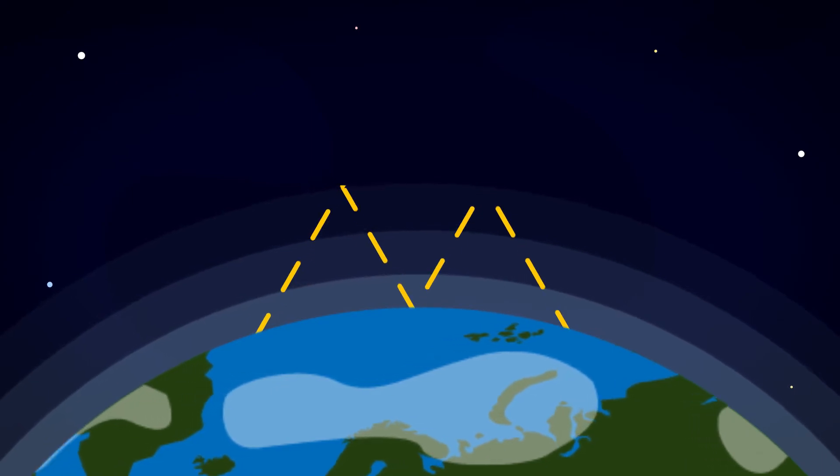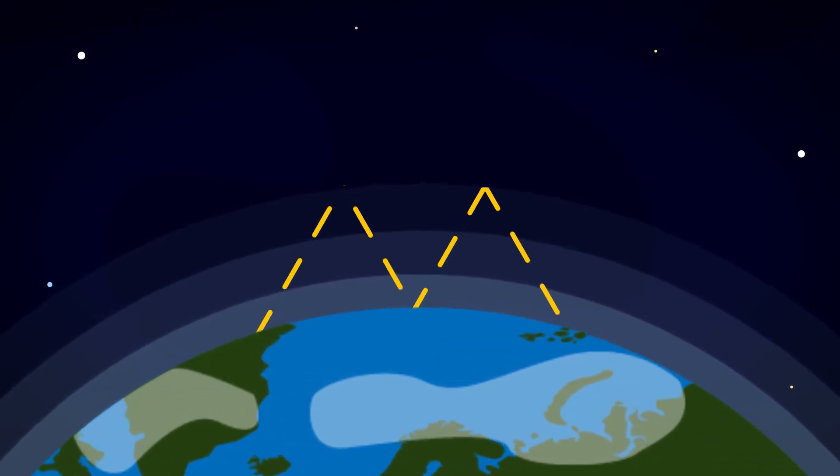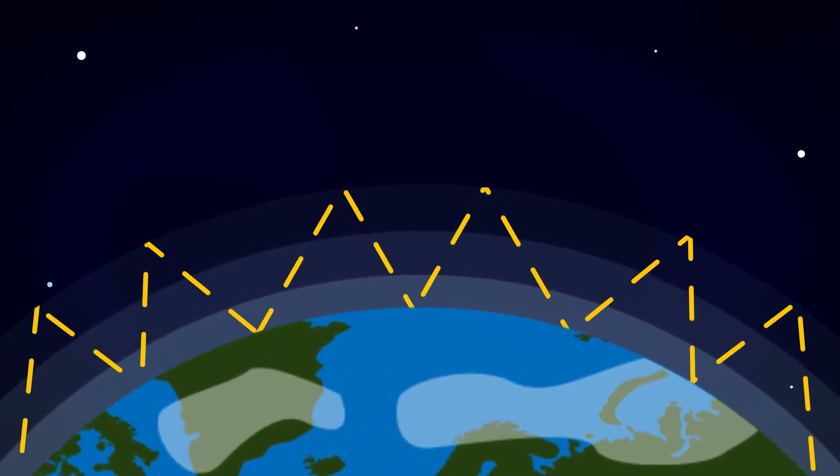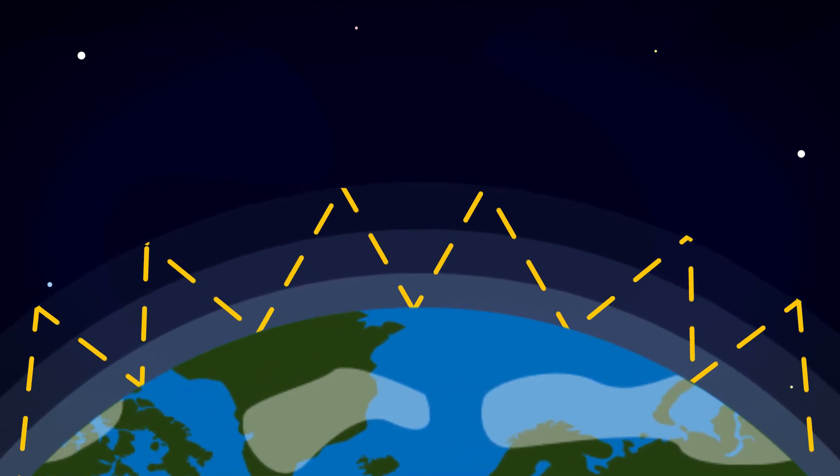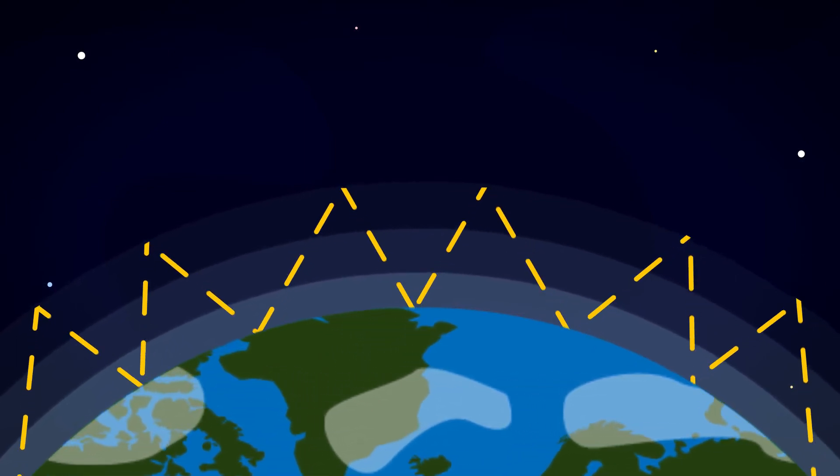Greenhouse gases are natural to the planet and are actually a good thing to have to help regulate temperature, but too much of them can have devastating consequences causing more heat to get trapped which makes the Earth warm up even more.